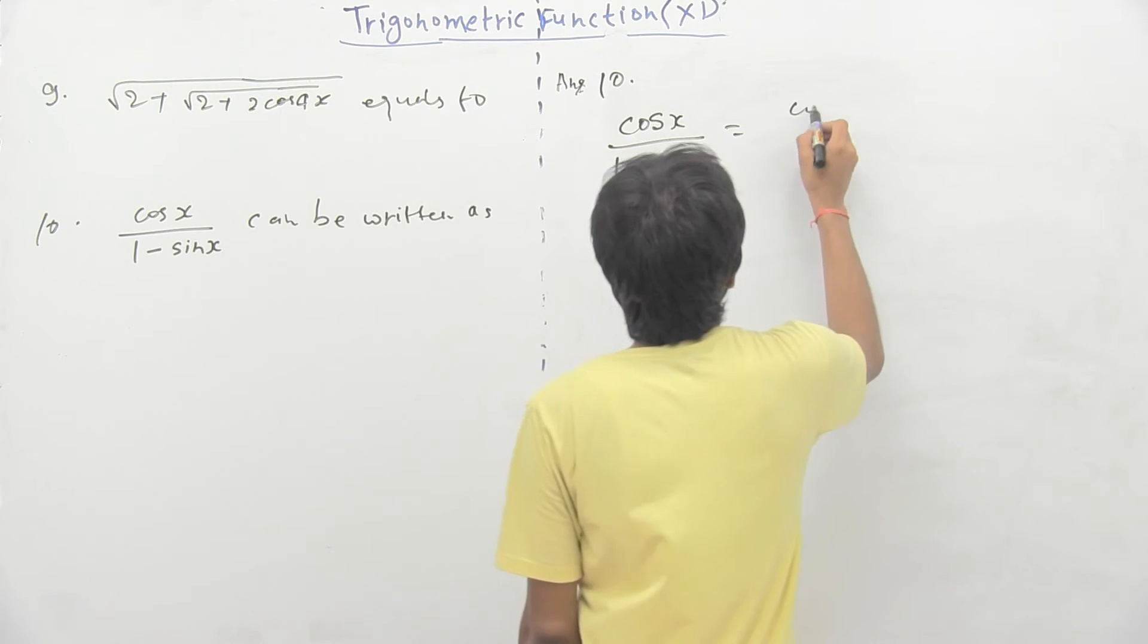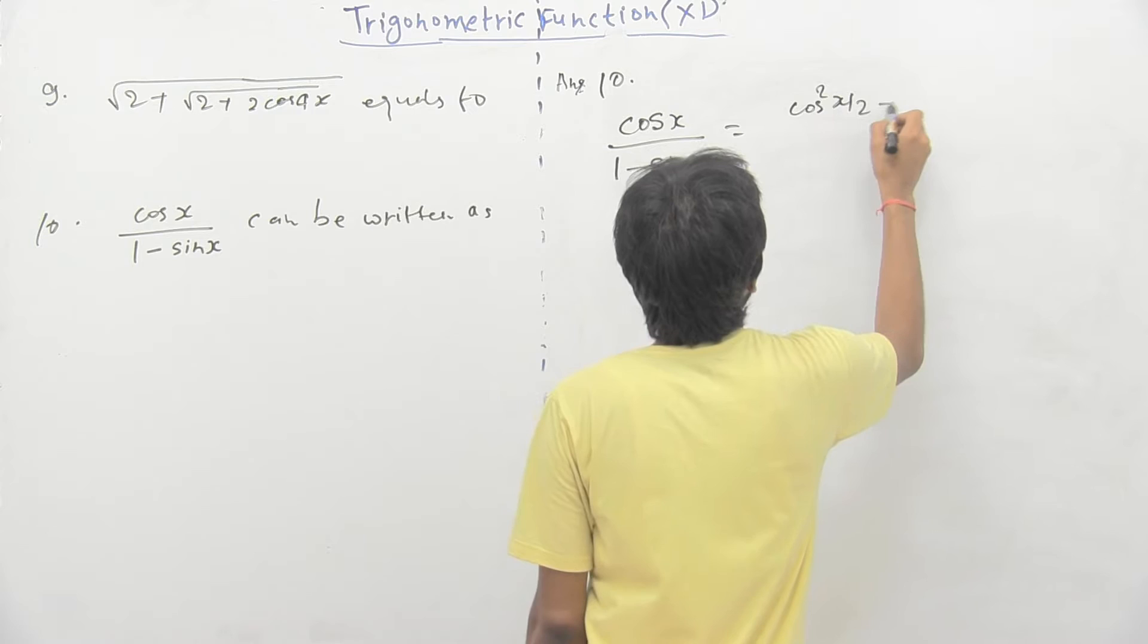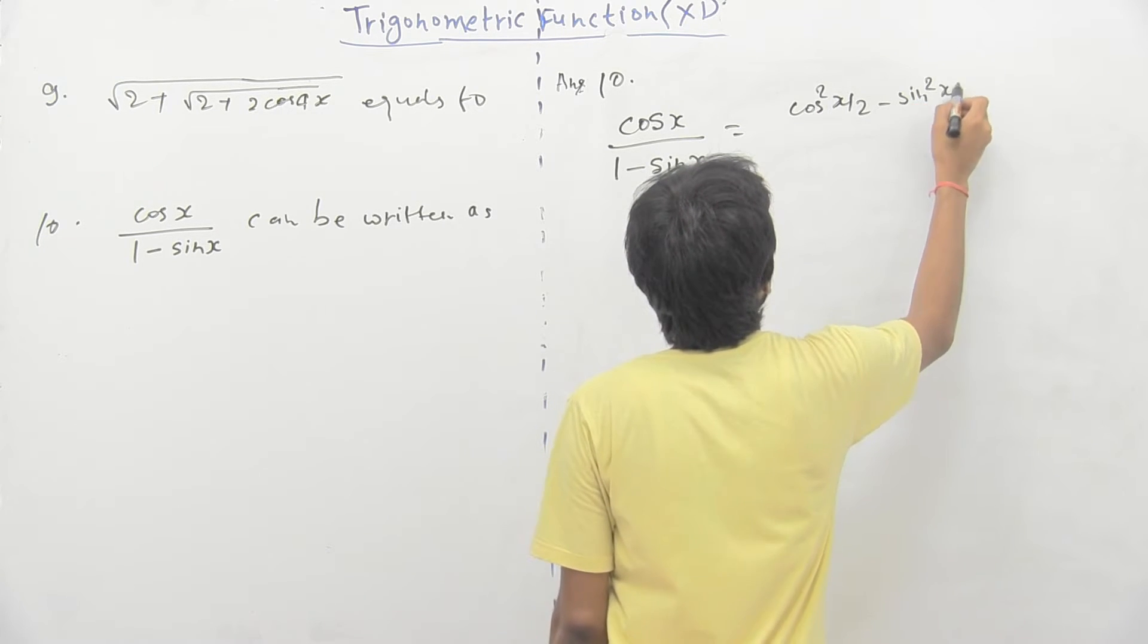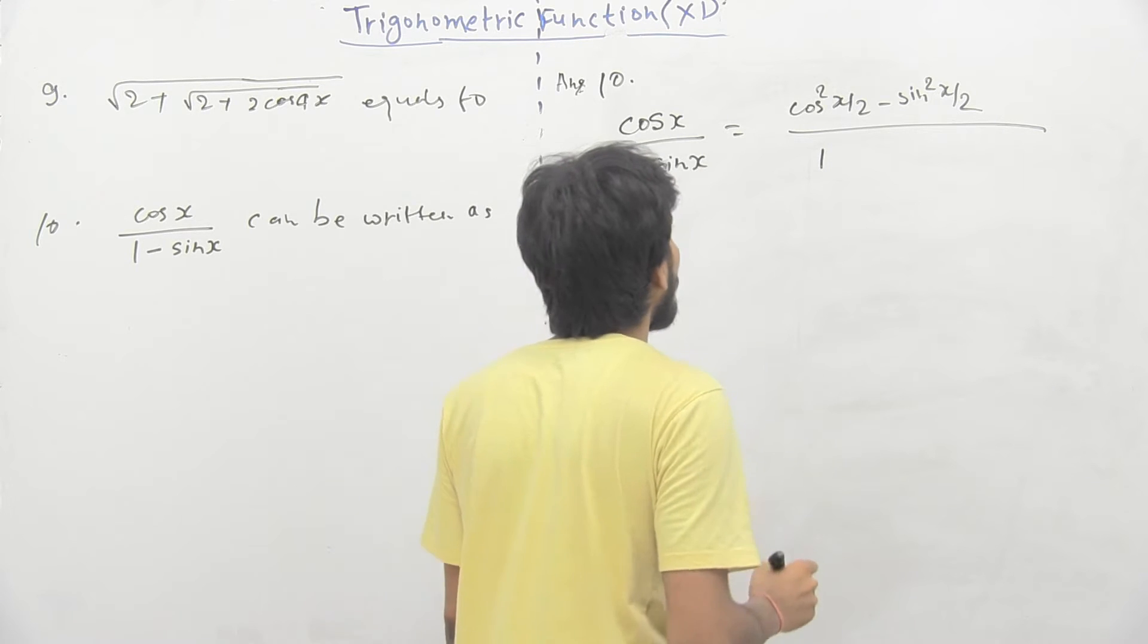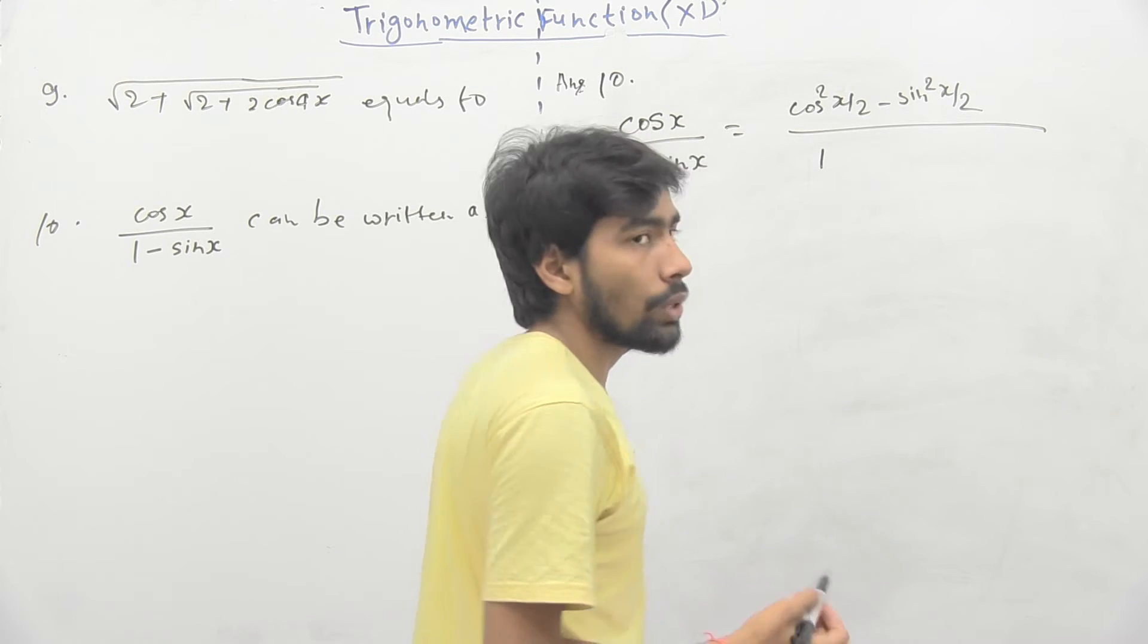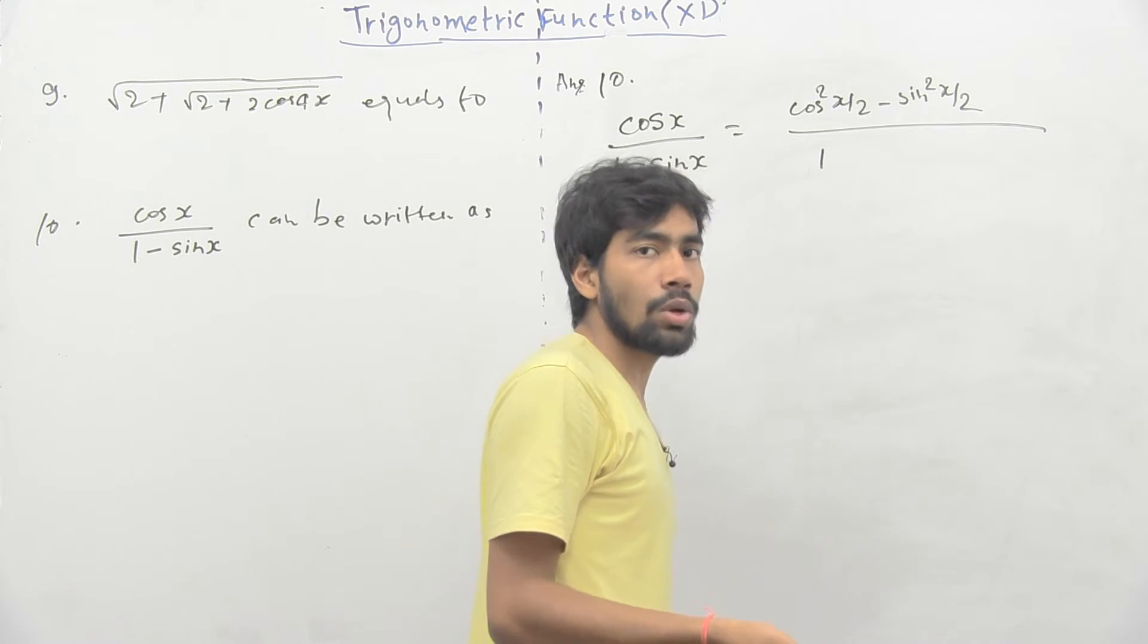Cos x equal to cos square x by 2 minus sin square x by 2 divided by 1 minus sin x. So, 1 can be written as sin square x by 2 plus cos square x by 2.